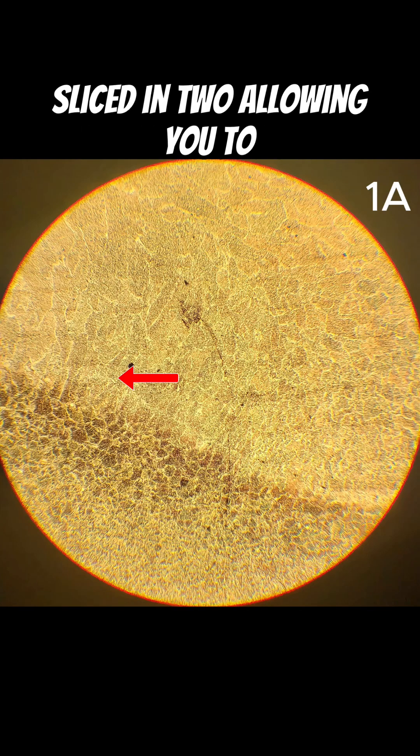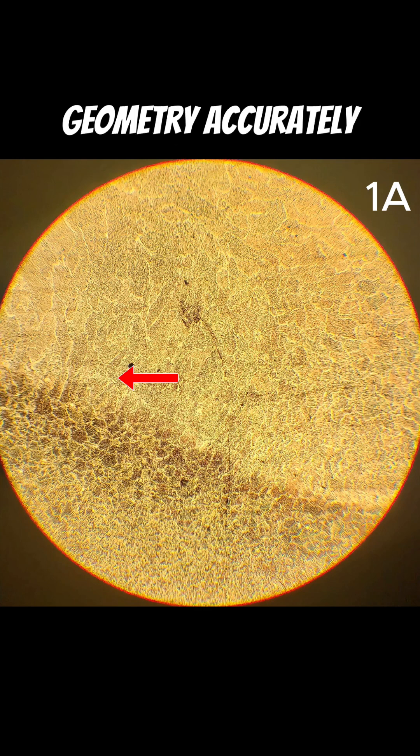How a cross-section would appear when sliced in two, allowing you to visualize the internal grain geometry accurately.